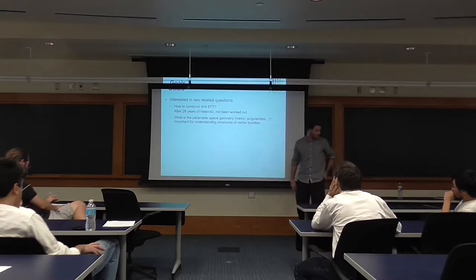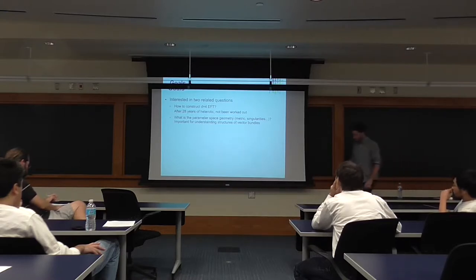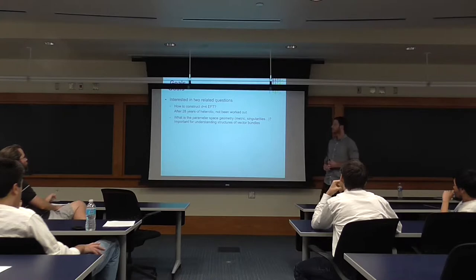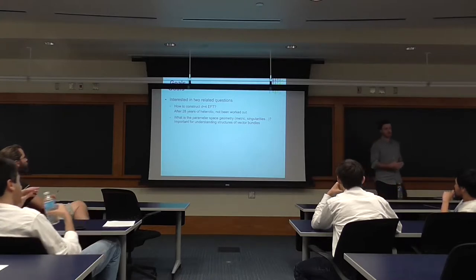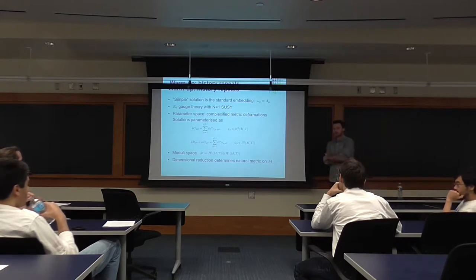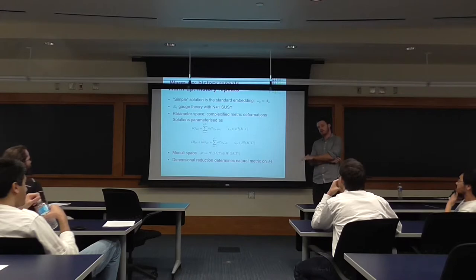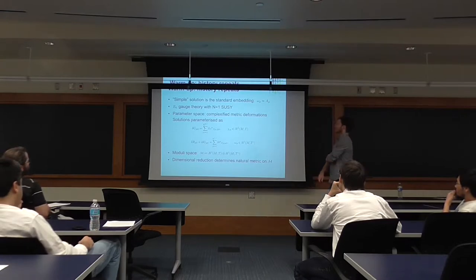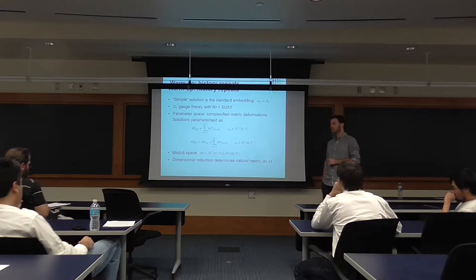So here are our goals. First, given this compactification data, how do we construct the four-dimensional effective field theory? Second, given that, what can we understand about the parameter space geometry — is there a natural metric you can put on the parameter space? That metric will appear essentially in the kinetic terms for the massless neutral scalar fields in the effective action. Before we get on to the interesting stuff, let's remind ourselves how the old story worked — the space of metric deformations.